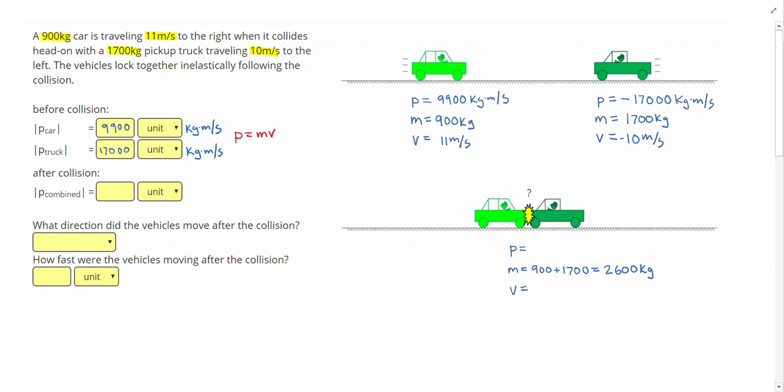I know that my total momentum at the initial time before the collision has to equal my total momentum after. I'm going to combine the two momentums on the first line. I do 9900 plus negative 17,000 and get negative 7100. That will be the final combined momentum of the car and truck. Although I got a negative number, this asked me for the magnitude, so I'm just going to type in 7100 kilogram meters per second.